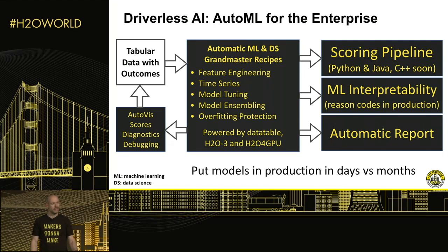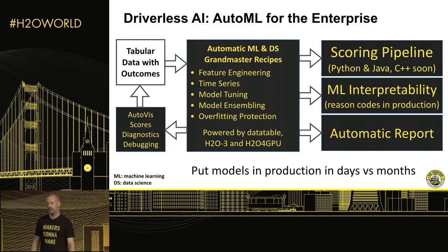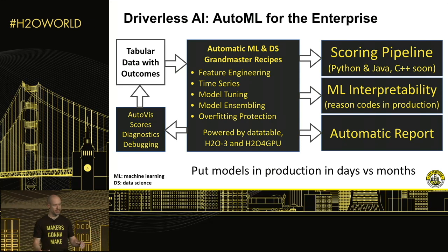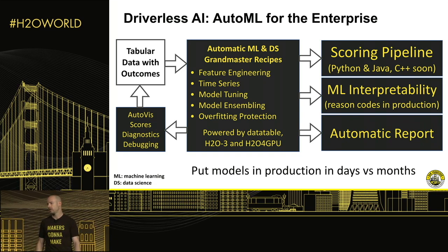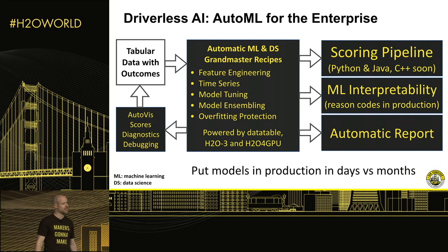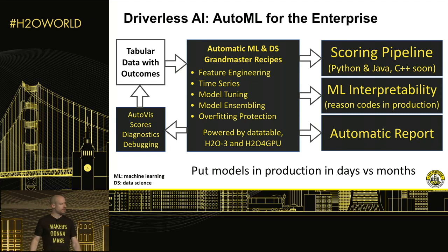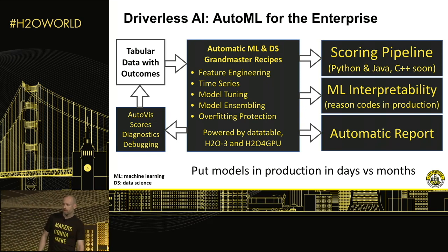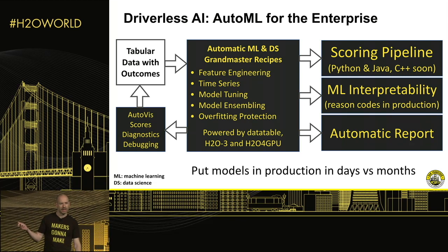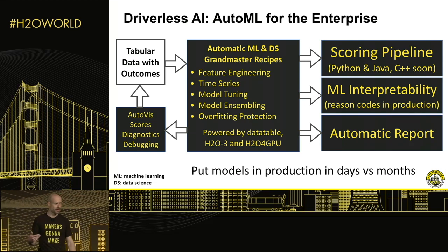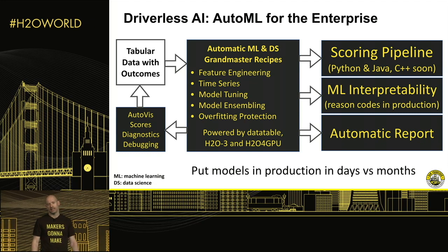There are a lot of techniques built into the system that are Kaggle Grandmaster level — really sophisticated. At the end, out comes a system that makes predictions, either in Driverless or as a standalone artifact you can put in production anywhere. Java runs anywhere, includes all the feature engineering — all baked into the standalone MOJO. You can deploy on Spark, deploy on Amazon Lambda, wherever you want. A C++ version is coming soon. There's also a deployable package with reason codes, Shapley values, and more. Automatic report documentation — everything is part of it.